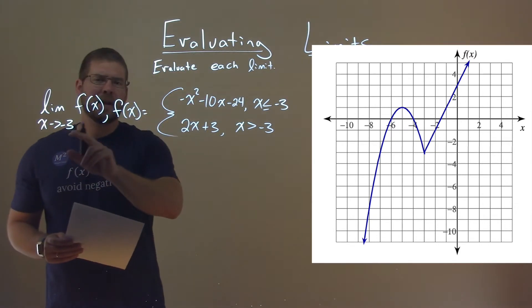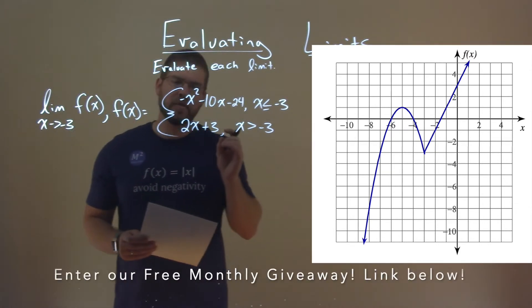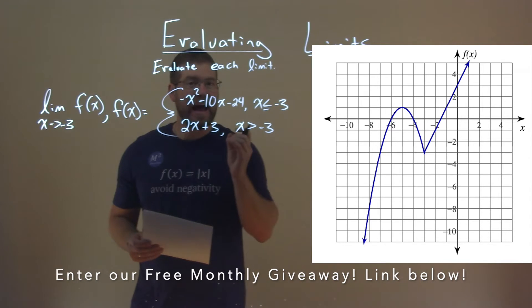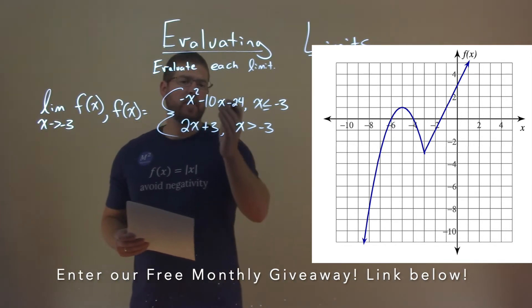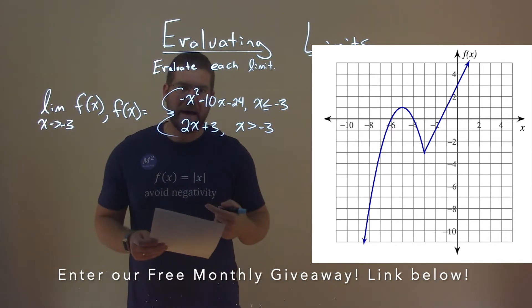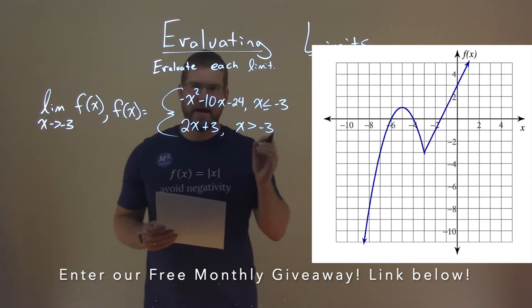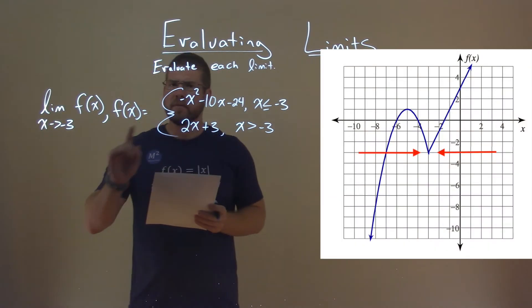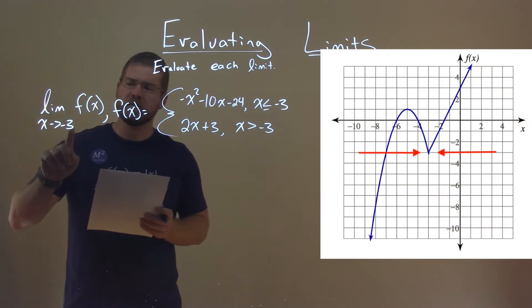So they tell us here we're finding when x approaches negative 3, and we can see on the graph that at negative 3, both of these functions here actually match. They meet up right there at negative 3, and it's important to note that here, because when we just have